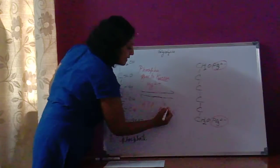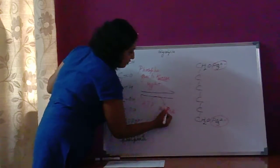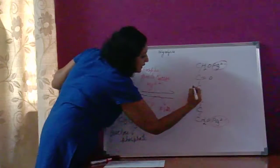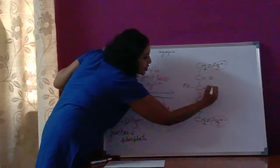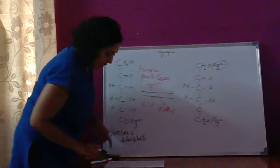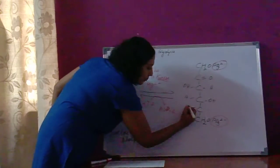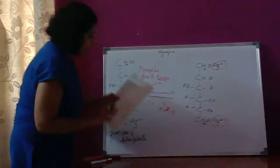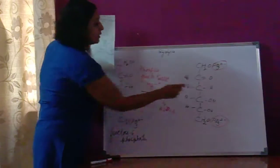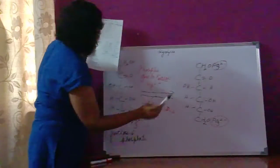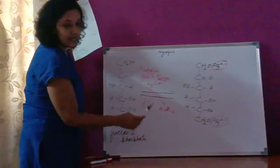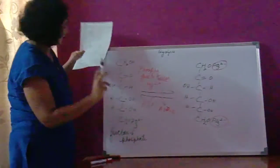ATP gets converted to ADP plus Pi. Let me write the structure of fructose 1,6-bisphosphate. At the 6-carbon atom, there is already a phosphorylated group: CH₂-O-PO₃²⁻. At the first carbon atom, phosphorylation has now taken place: CH₂-O-PO₃²⁻. The second carbon has a double bond to O (C=O). The third carbon is OH, H. The fourth carbon is H, OH. The fifth carbon is also H, OH. The sixth carbon already has the phosphorylated molecule.